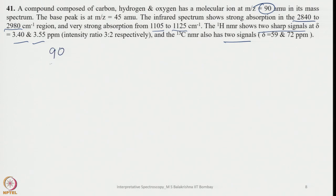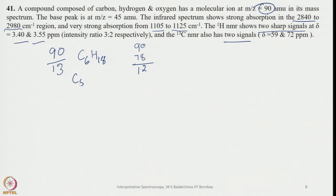First, take 90 divided by 13 — we get 78 with remainder 12, giving C6H18. Since oxygen is present, let us remove one oxygen (equivalent to CH4 + 16), giving C5H14O. Removing one more gives C4H10O2.